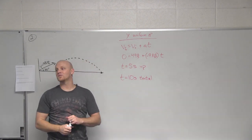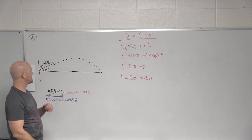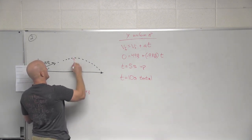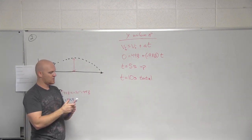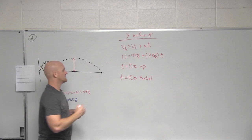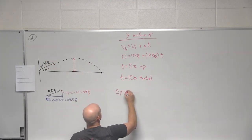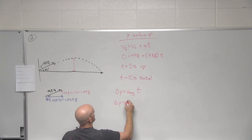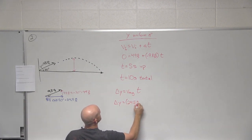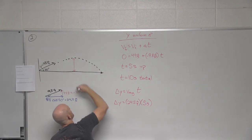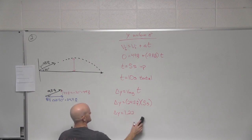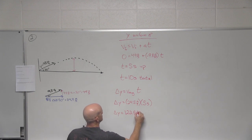Now that we know the time of flight, we can solve any other question. Next: maximum height — which deals with the y direction. We reach the apex and we already worked this out. Using delta-y = v_average · t, the average velocity is 24.5 meters per second and the time up is 5 seconds, giving us a maximum height of 122.5 meters.